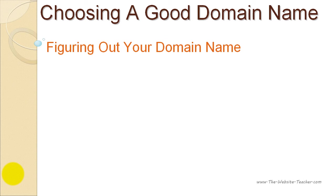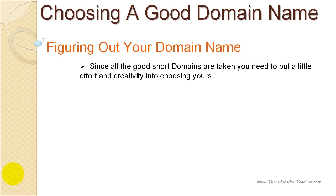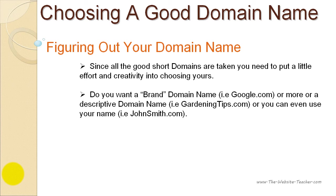Now that you have a better understanding of domain names, you can start working at coming up with your own. Since all good short domain names are most likely taken, you'll need to be a little creative and maybe make it slightly longer. There are three different ways you can choose the domain name for your blog: you can use either a brand name, a descriptive domain name, or even your own name. It is entirely up to you which method you want to use.